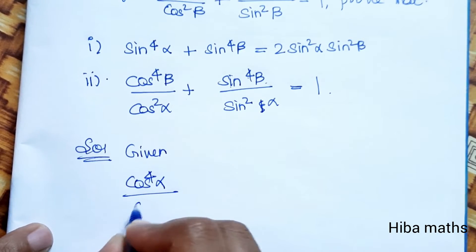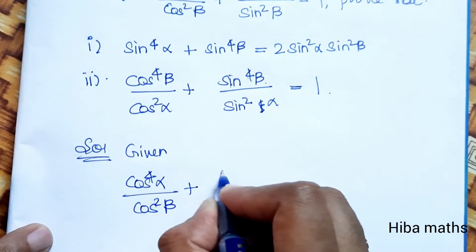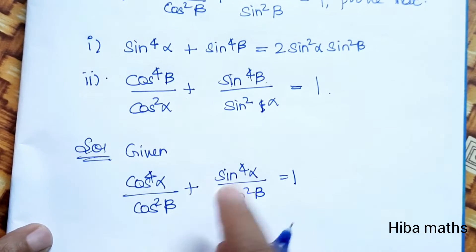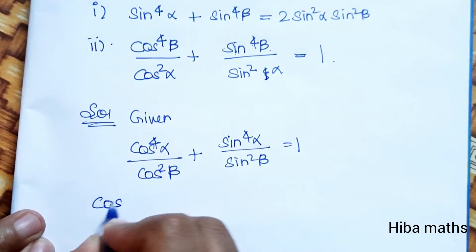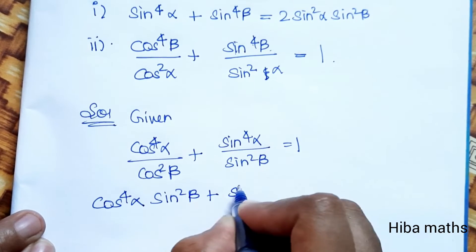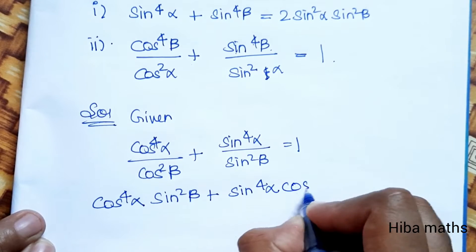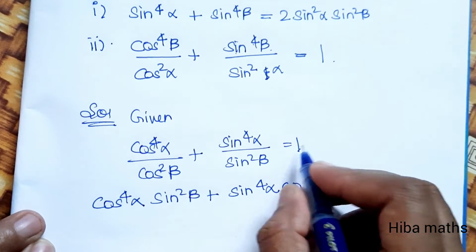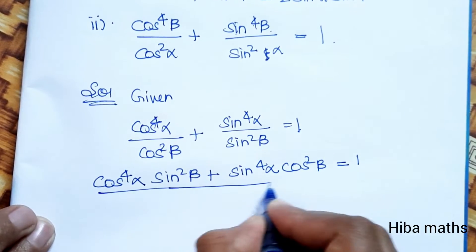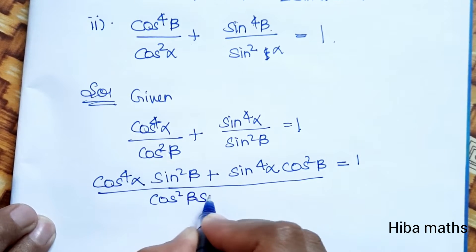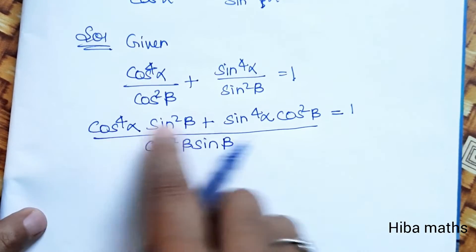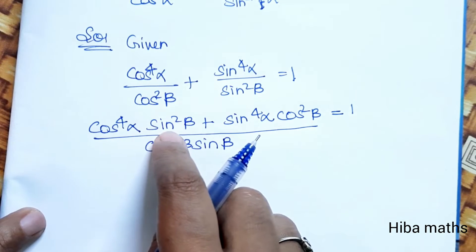Given: cos⁴α/cos²β + sin⁴α/sin²β = 1. First, let's cross multiply. cos⁴α·sin²β + sin⁴α·cos²β = 1.